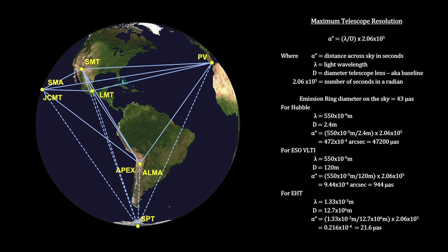This results in an array with a resolution limit of around 21 micro-arc seconds. This is enough to see the M87 black hole's emission ring with its shadow.